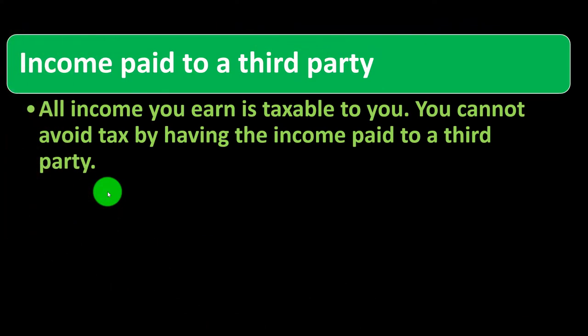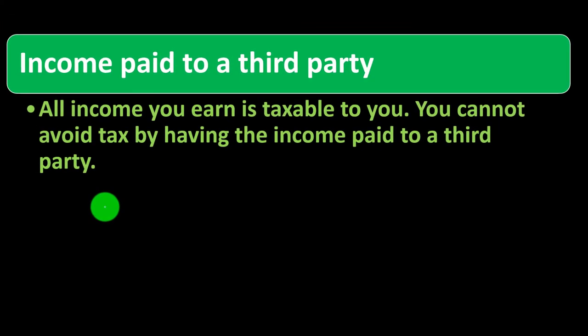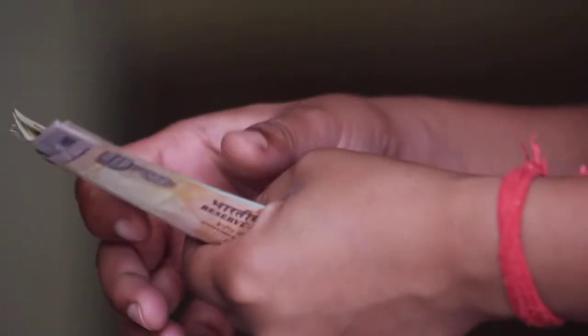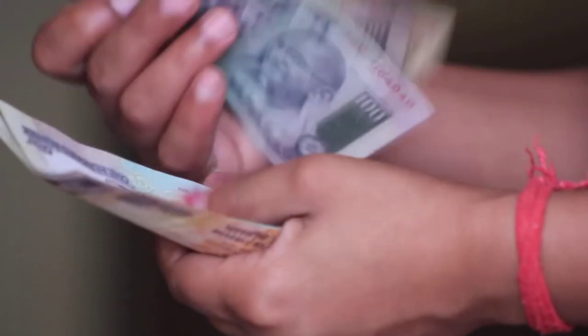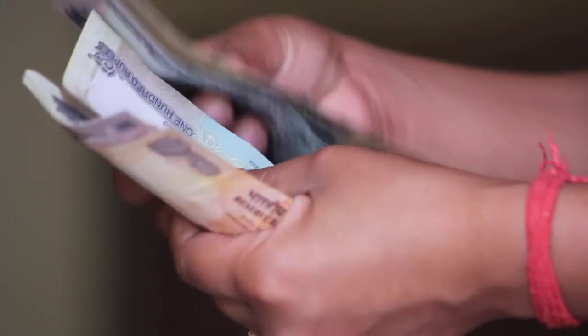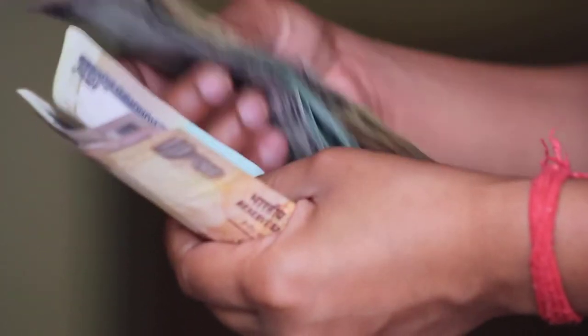Income paid to a third party: all income you earn is taxable to you. You cannot avoid tax by having the income paid to a third party. If income is due to you, you've constructively received it — even if you direct it to be paid to someone else on your behalf — because if you can receive that income at any time, you have, in essence, constructively received it.